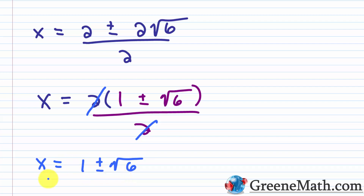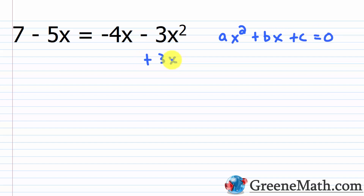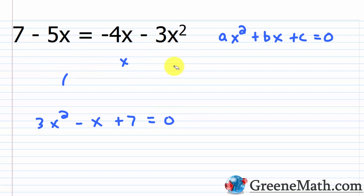This represents two solutions: x equals 1 plus the square root of 6, and x equals 1 minus the square root of 6. For the next example, we have 7 minus 5x equals negative 4x minus 3x squared. We add 3x squared to both sides and add 4x to each side. That gives us 3x squared, and then 4x minus 5x is negative x, plus 7 equals zero. So a is 3, b is negative 1, and c is 7.